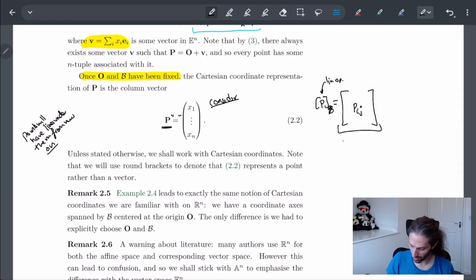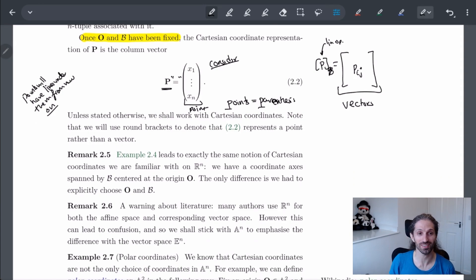Points get parentheses, vectors get brackets. But we can pretend that b and b are the same letter and we're good.